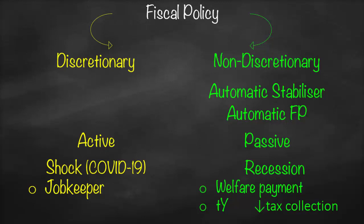In Australia, for example, we applied something called JobKeeper, giving a lot of funds to companies in order to keep their employees. We also started to decrease the tax rate — not only decreasing the tax collection, but actually lowering the tax rate itself. This happens only when we have a crisis. During normal fluctuations of the business cycle, we just use the automatic stabilizer, which is the system already in place.